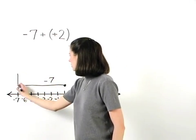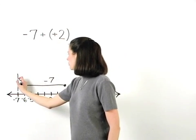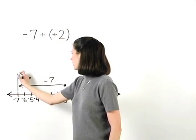Then from there, positive two moves us two units back to the right.